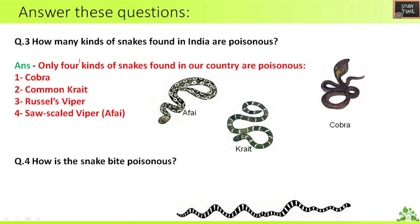Third question: how many kinds of snakes found in India are poisonous? The poisonous snakes are cobra, krait, Russell's viper, and saw-scaled viper. These are the varieties of snakes found in India which are poisonous.